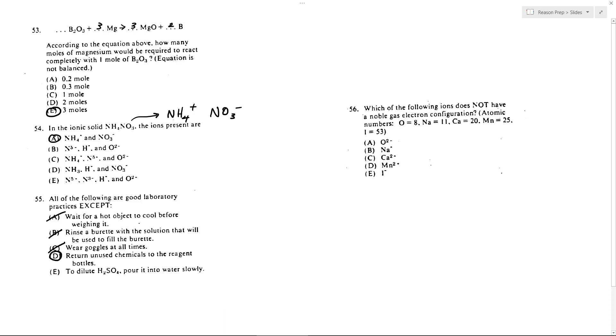So D looks like it's going to be our answer. And then E is true. If you're going to dilute any acid, but especially sulfuric acid, you want to pour the acid into water, not water into acid. So we get rid of E, and so we get choice D.